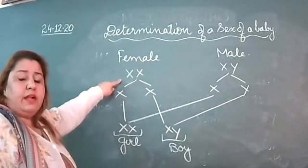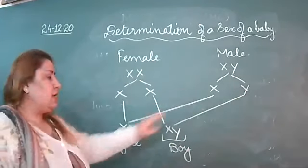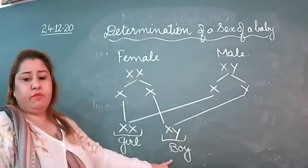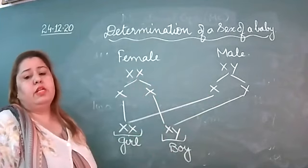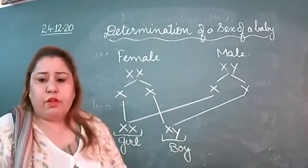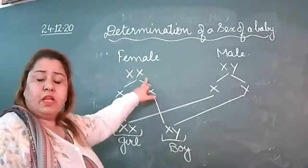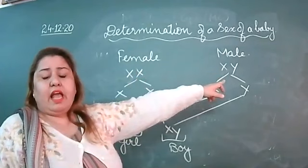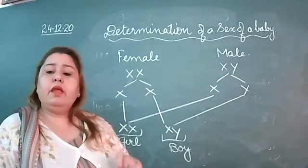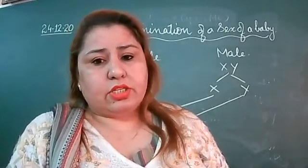When there is fusion of the sex chromosomes, if X fuses with X, then the baby will be a girl. And if X fuses with Y, then the baby will be a boy. By this, we can determine the sex of a baby. These are the myths that girls are responsible for the girl child — that is wrong, because females have the same chromosome, XX. In males, they have two different chromosomes, X as well as Y, and Y is responsible for the baby boy. After that, we will discuss the next topic in the next lecture. Thank you.